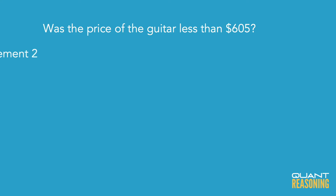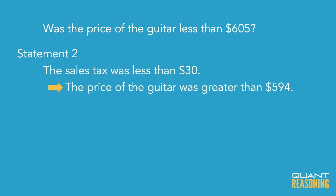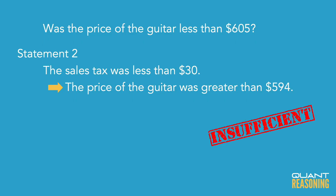If it's less than $602, it's definitely less than $605, so Statement 1 is sufficient on its own. We can eliminate answer choices B, C, and E — we're down to A or D. Statement 2 says the sales tax was less than $30, which means the price of the guitar was more than $594. But knowing it's more than $594 doesn't tell me which side of $605 it's on, so Statement 2 is not sufficient on its own. The correct answer is A.